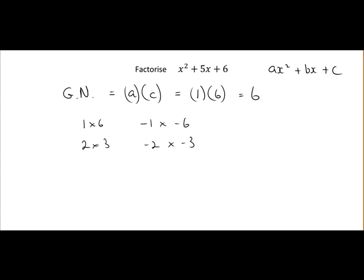Our next step is to identify the pair of factors that will add up to give the x coefficient, which in this case is plus 5. So which of these sets of factors add up to give us plus 5? If we analyze it we can see plus 2 and plus 3.